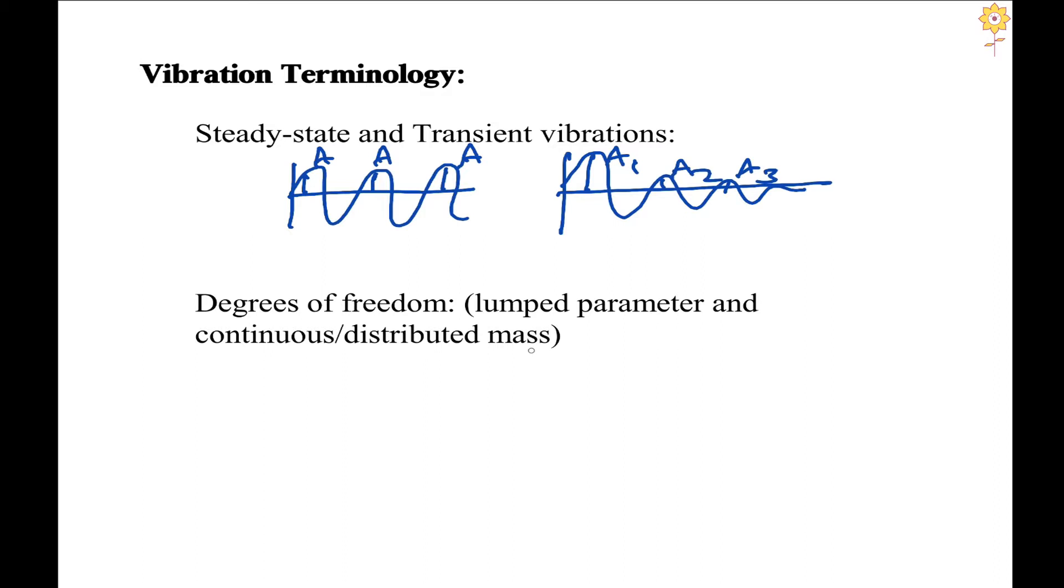We have the types of masses as lumped mass or discrete masses, and continuous or distributed mass. Lumped mass is defined by a rigid mass. The motion of each and every particle in the mass will be described by the motion of only one point, that is the center of gravity.